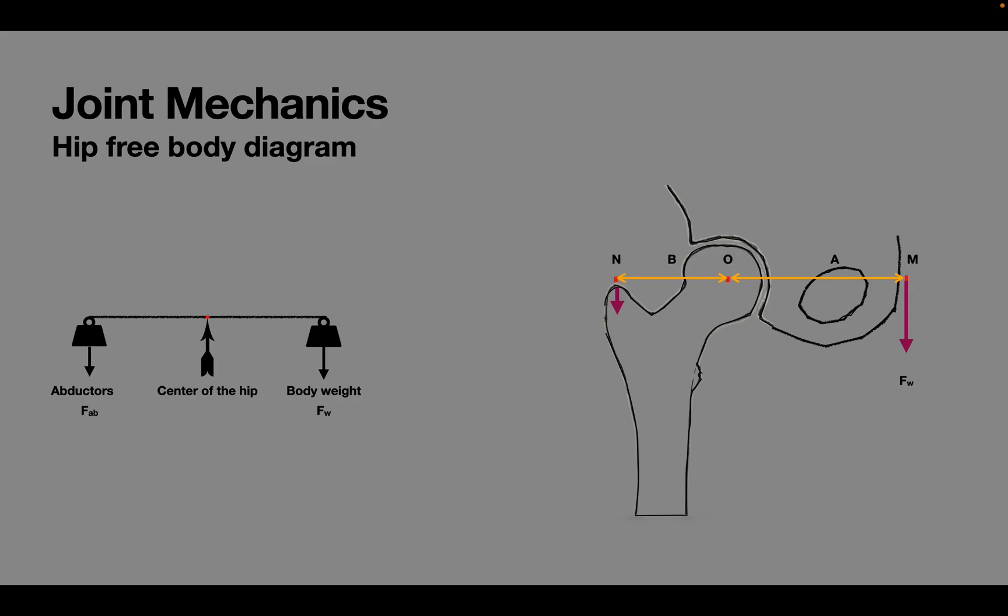The combined forces of the body weight and the abductors produce a vertical joint reaction force at the center of the hip. Due to the anatomical construct of the hip, the actual joint reaction force FJ is set at about 30 degrees to the vertical plane.